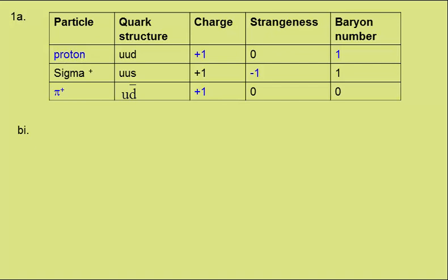In B part 1, we need to give an example of a baryon and its corresponding antiparticle. Well, a proton is a baryon, and the antiproton would be its antiparticle.